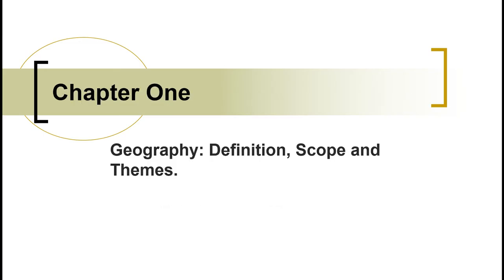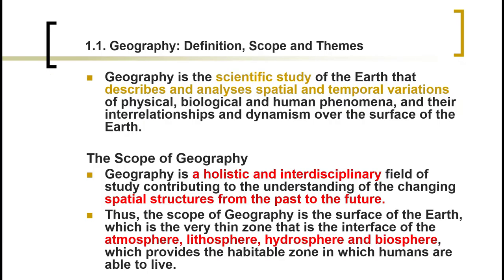Let's begin from defining the term geography. Geography is the scientific study of the earth, comprising of several phenomena just like geology, climatology, vegetation and other things. It analyzes and describes the spatial and temporal variations of physical, biological and human phenomena. How physical aspects like soil are distributed spatially and temporally over the earth surface can be studied by geography.